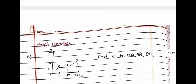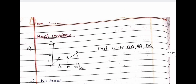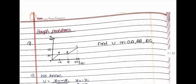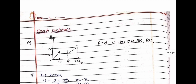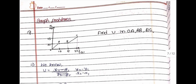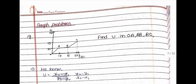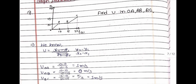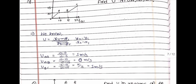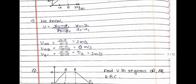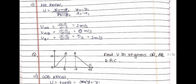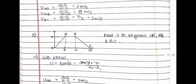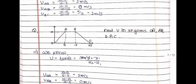Now the graph problems. In question one, you have to find the velocity in regions OA, AB, and BC. In question two, you also have to find the velocity in regions OA, AB, and BC.